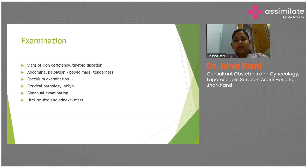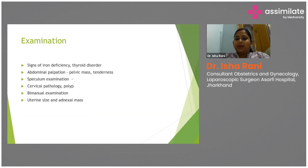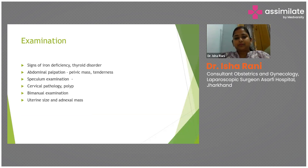Examination begins with pallor, which tells us about signs of iron deficiency. Neck examination checks for the presence of goiter or thyroid disorder. Abdominal palpation helps identify any pelvic mass or tenderness. Speculum examination is important to identify cervical pathology or any endometrial polyp protruding through the cervix. Bimanual examination is done to assess uterine size or the presence of any adnexal mass.